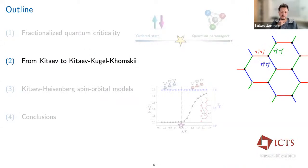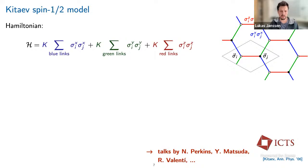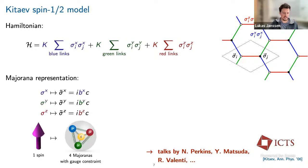Let me take one slide to review the Kitaev model. The Kitaev model is a spin-1/2 model on the honeycomb lattice with three different types of bonds — shown in blue, red, and green — featuring Ising-type spin-spin interactions between nearest neighbors. The crucial point is that on these three different bond types, there are different quantization axes for the Ising axis. This model can be solved exactly using a Majorana representation: you replace the Pauli matrices σx, σy, σz by products of Majorana operators.